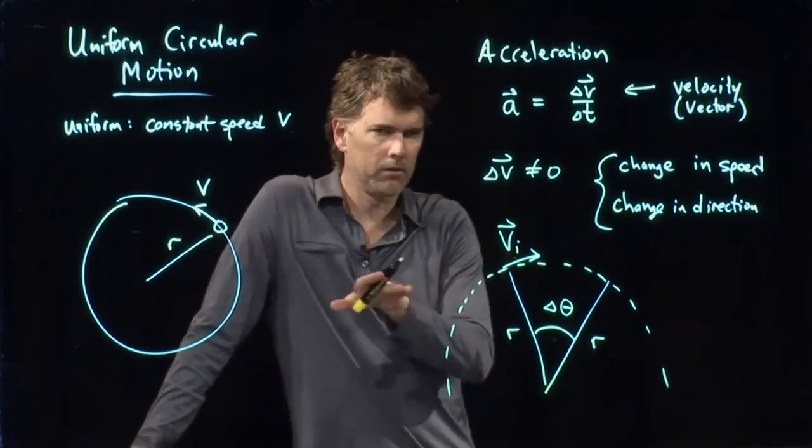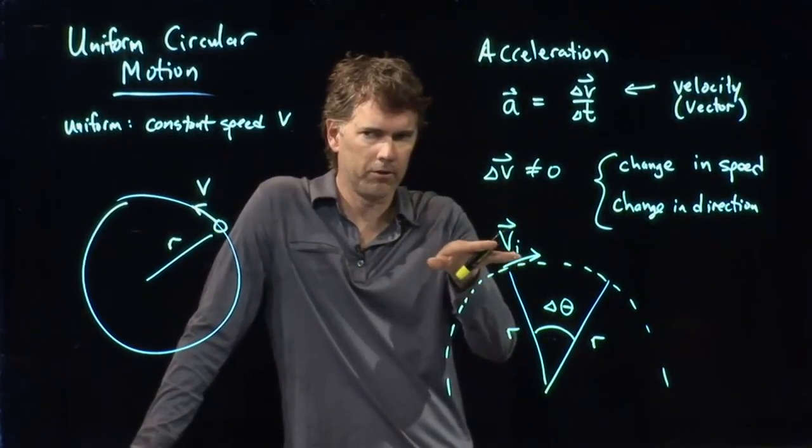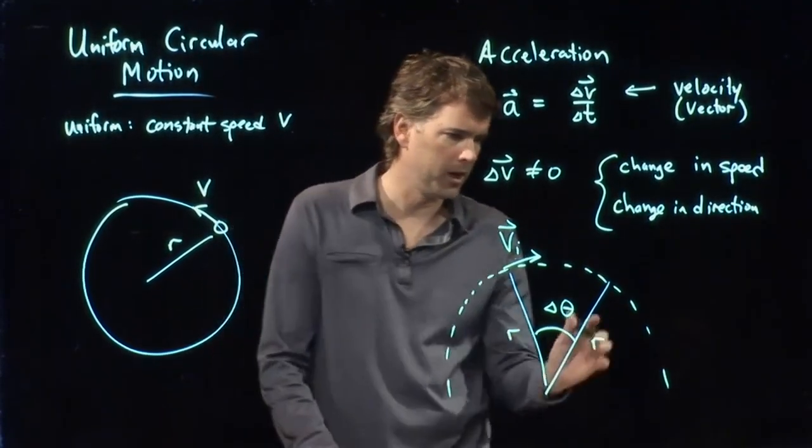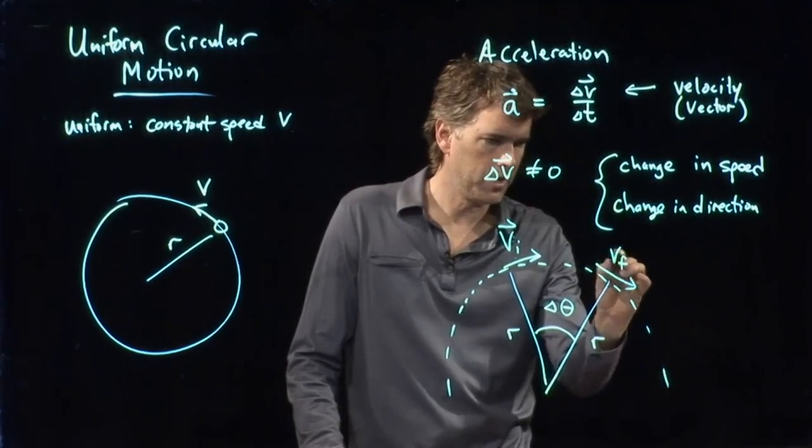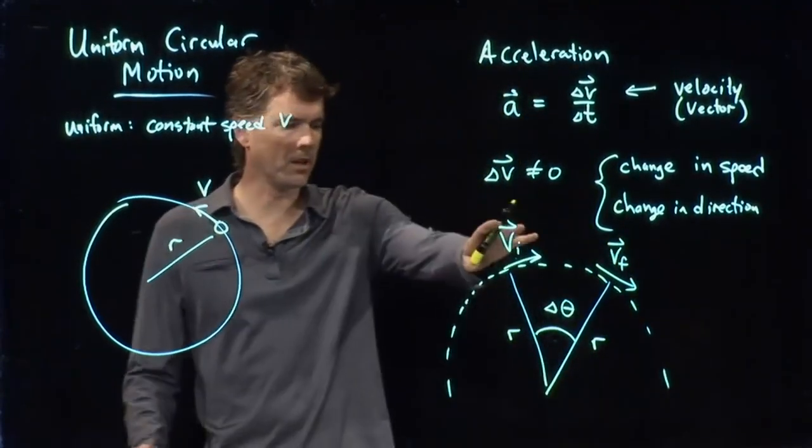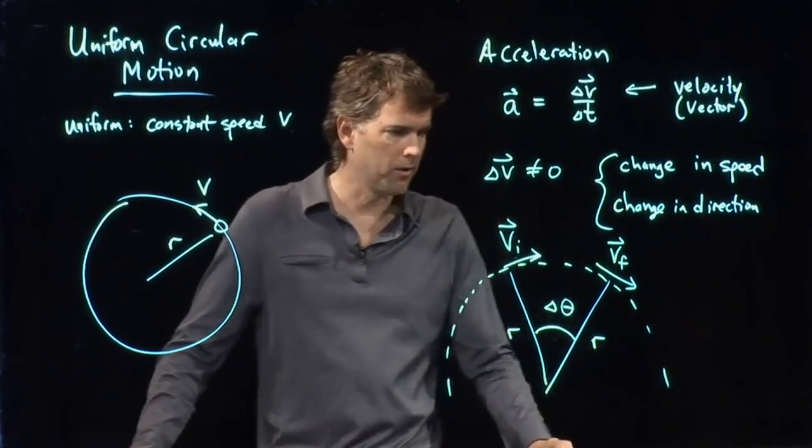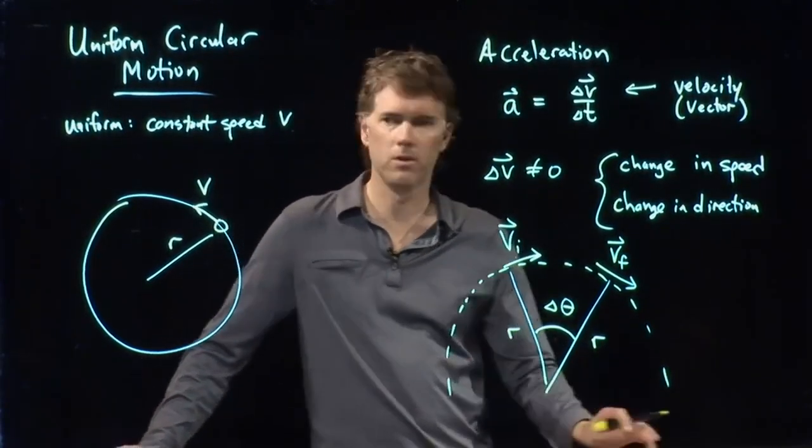Your velocity is always tangential to the circle in uniform circular motion. So the initial velocity is there. The final velocity is there. We have clearly changed directions for our velocity. And so that is going to lead to an acceleration.